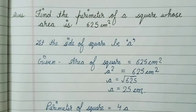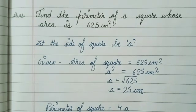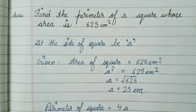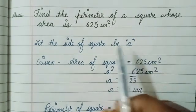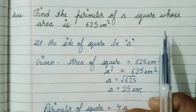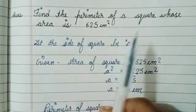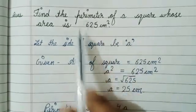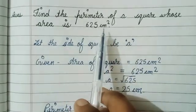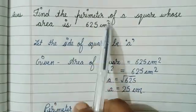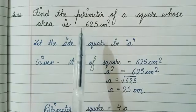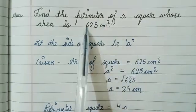We were asked to find the perimeter of a square whose area is given as 625 centimeter square. To find the perimeter of the square, we first needed to find the side.